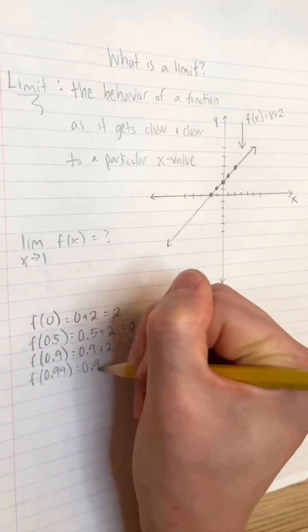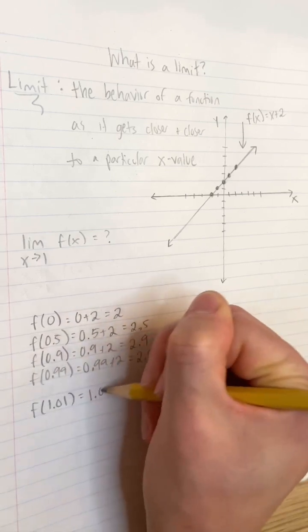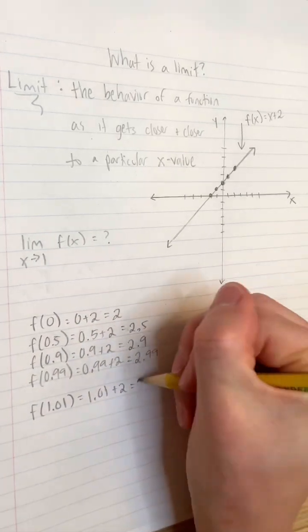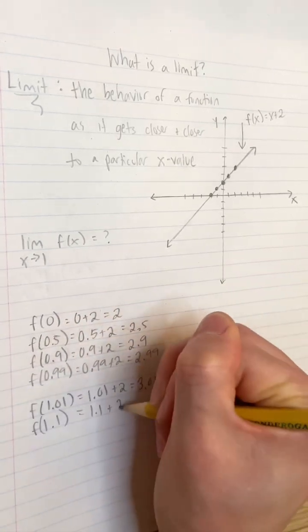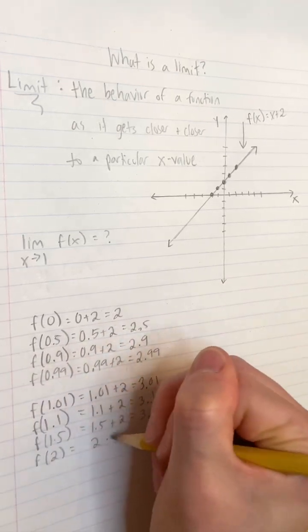Let's calculate the output of this function for inputs close to but less than 1, like 0, 0.5, 0.9, or 0.99. Let's also calculate the output for inputs close to but greater than 1, like 2, 1.5, 1.1, or 1.01.